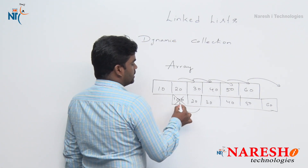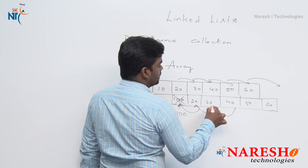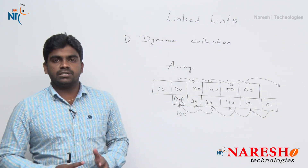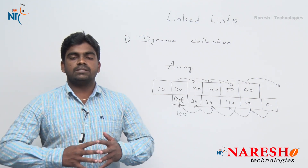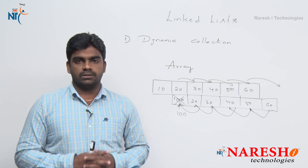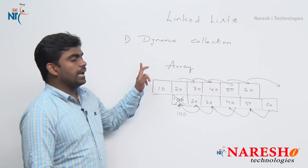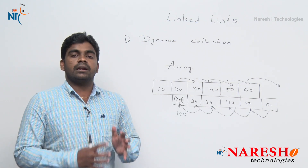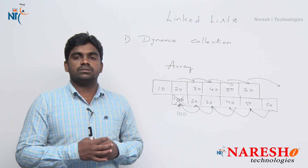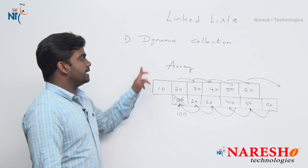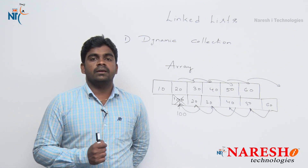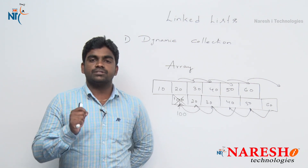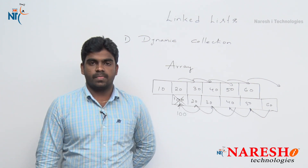For example, if you want to delete 100, then again we have to shift all the elements. Here it is only 4 or 5 elements, but in real time we are storing lakhs of elements. So instead of using arrays, it is better to go for a Linked List. In a Linked List, insertions and deletions are much faster when compared with arrays, stacks, and queues.